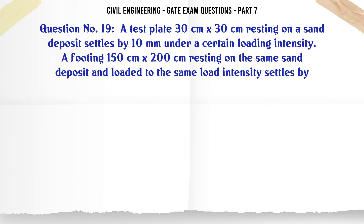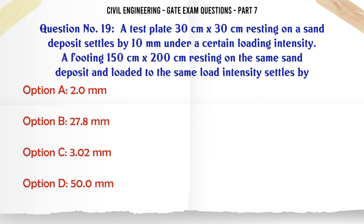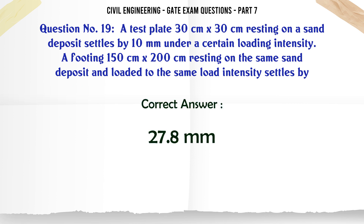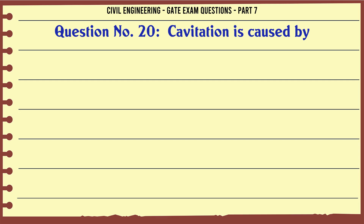A test plate 30 cm × 30 cm resting on a sand deposit settles by 10 mm under a certain loading intensity. A footing 150 cm × 200 cm resting on the same sand deposit and loaded to the same load intensity settles by: A) 2.0 mm, B) 27.8 mm, C) 3.02 mm, D) 50.0 mm. The correct answer is 27.8 mm.